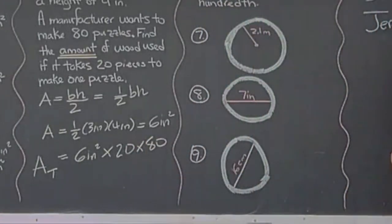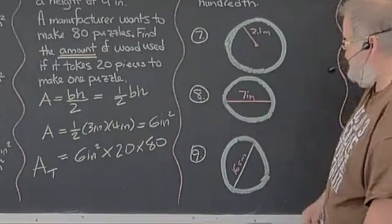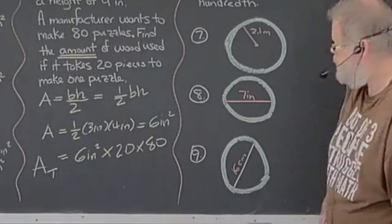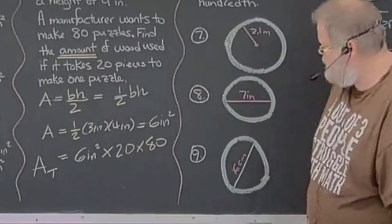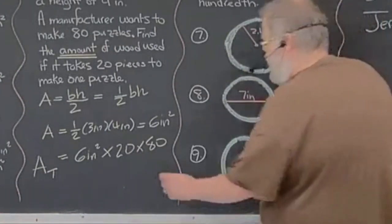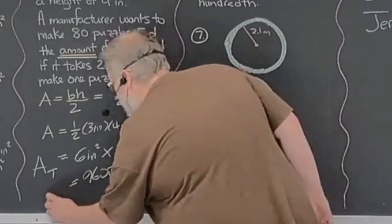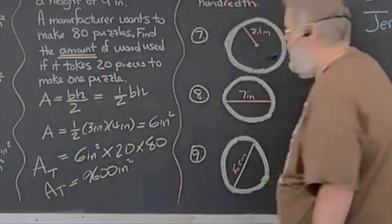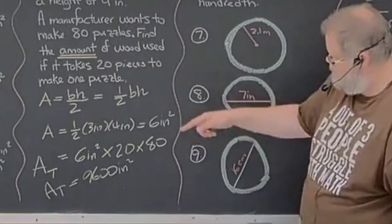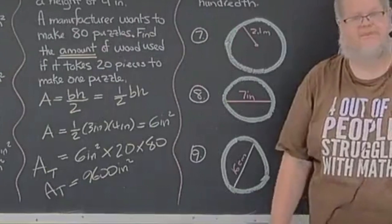So this is going to be a multiplication problem. The total area, I'm going to put a capital T down here for total, is equal to 6 inches squared for one piece, times 20 for one puzzle, times 80 for 80 puzzles. 6 times 20 is equal to 120. And 120 times 80, final answer, 9,600 inches squared is the total area.